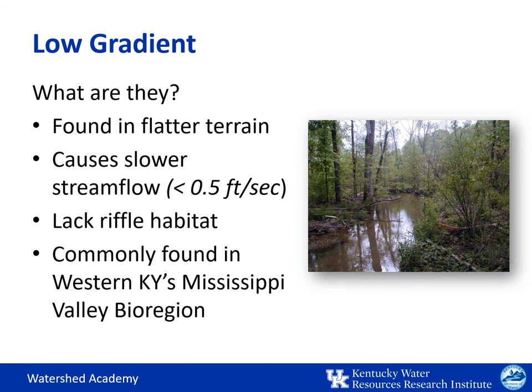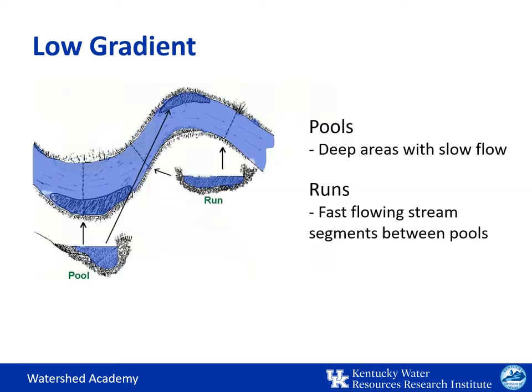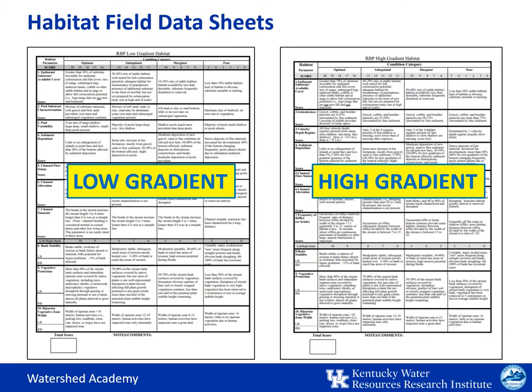In contrast, low gradient streams are found in flatter terrain and have a slower stream flow rate. They lack the riffle habitat seen in higher gradient streams and are commonly found in western Kentucky's Mississippi Valley bioregion. Flow depths and speeds are more limited to pools and runs in low gradient streams, so we don't really see true riffles there. There are two different habitat assessment forms for high and low gradient, so it's important to use the correct form for the stream you are assessing.